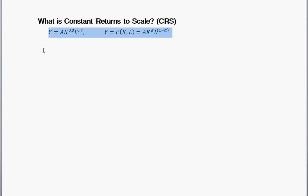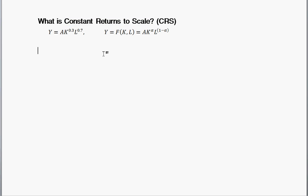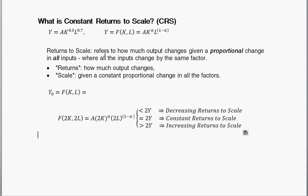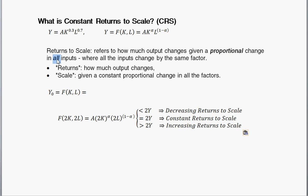So in order to discuss what constant returns to scale is — sometimes called CRS — let's start off with what returns to scale is. Returns to scale refers to how much output changes. Y is labeled output, sometimes production, sometimes real income, sometimes GDP, usually output. How output changes given a proportional change in all the inputs, where all those inputs change by the same factor.